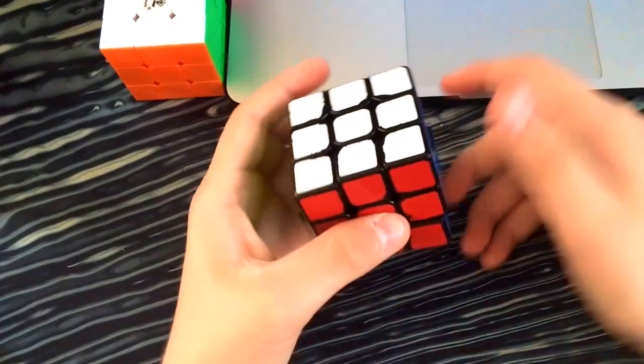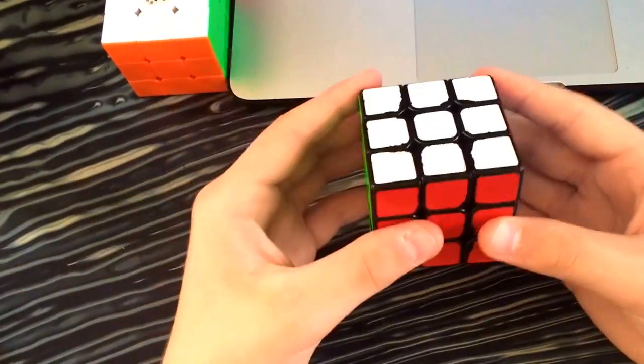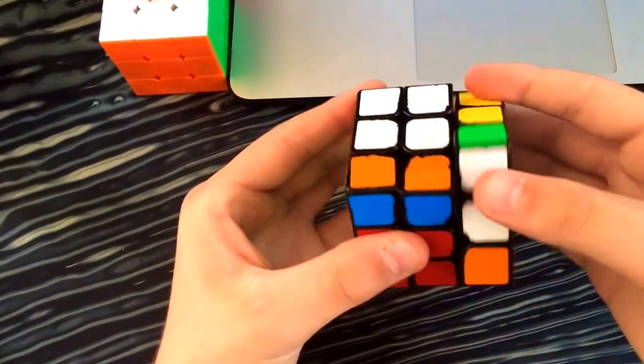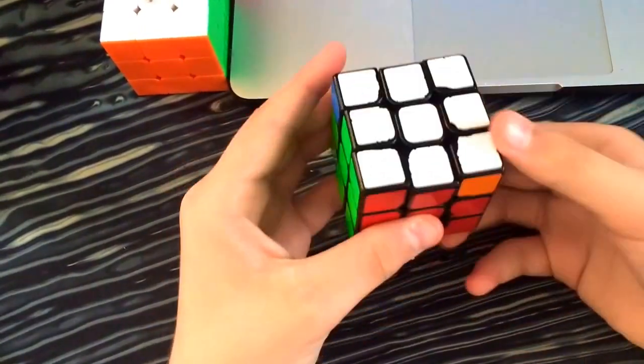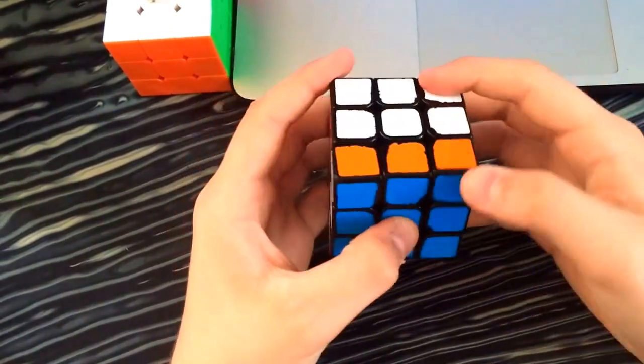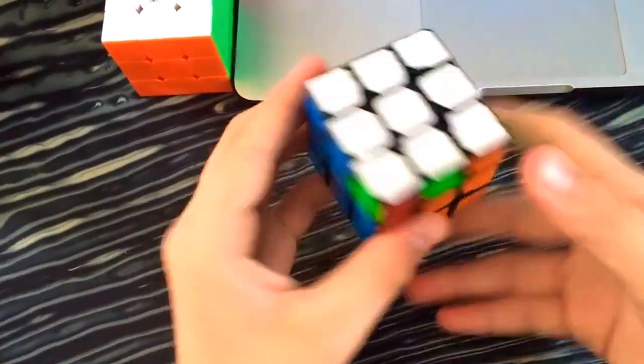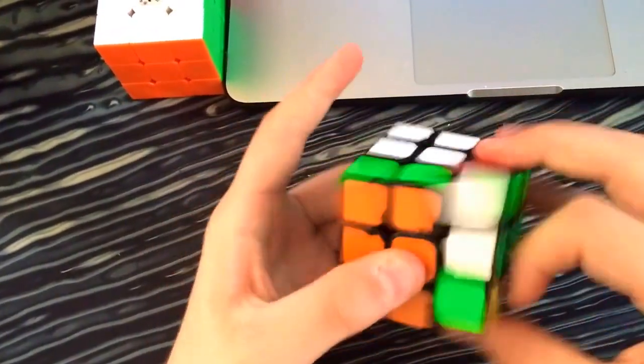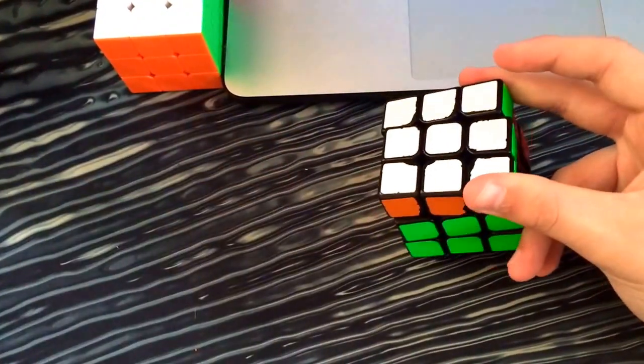For the V perm. So the V perm. It's a little bit different than the Bob Burton website. But they use this. But I do it like this. I do a rotation. I find it a bit easier to execute. Rather than, I pause too much during the D prime. Or the DW prime. But that's okay.